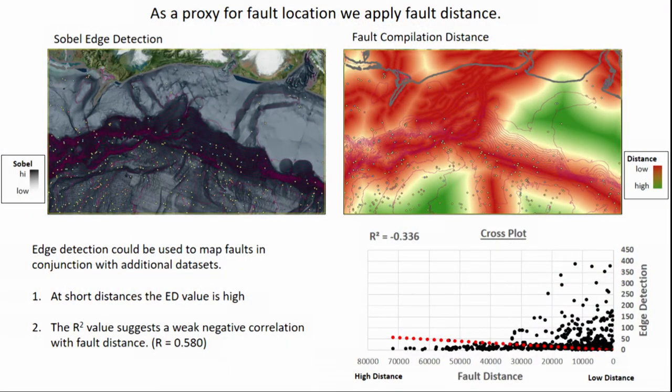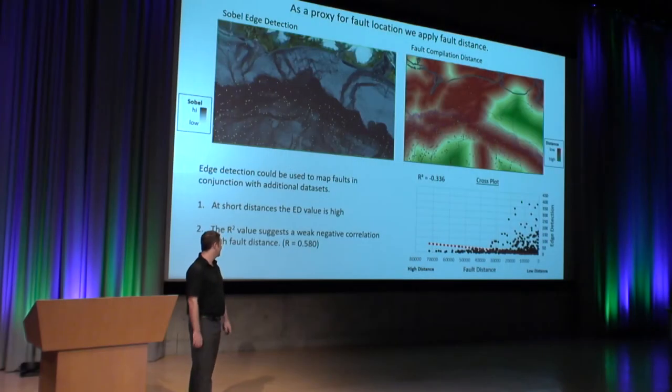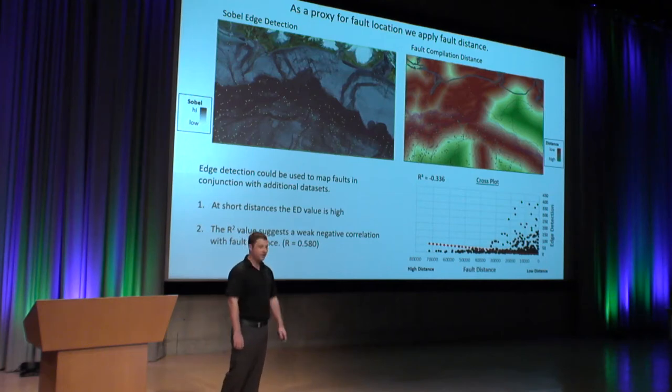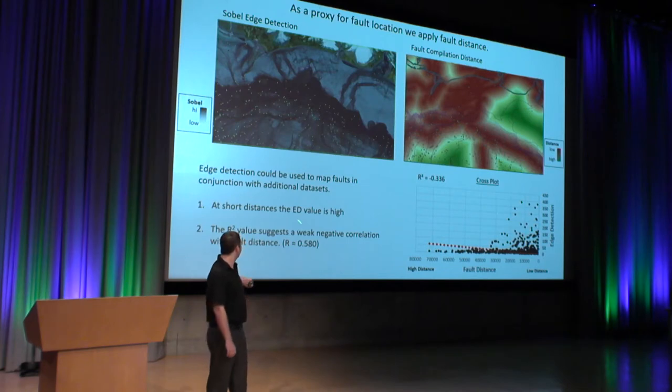In order to compare pixel to pixel, we had to transform faults into fault distance — instead of comparing just one line, we have a whole map of the region that's fault distance. What we've seen is that at short distances, the edge detection value is high, which is what we'd expect if there's a correlation between this edge detection algorithm and our fault locations. We did some statistics, and the R value was 0.58 — a negative correlation, which is why at short distances the value is high.